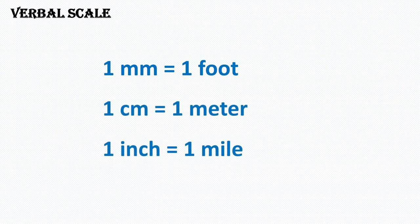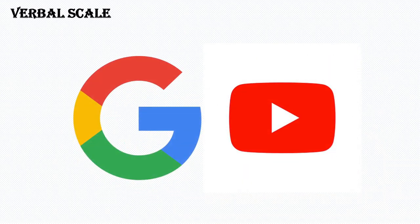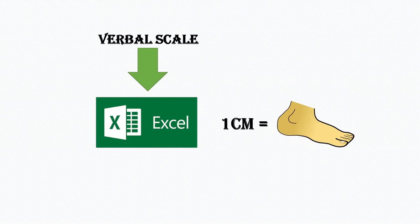Some examples of verbal scale: one millimeter equals one foot, one centimeter equals one meter, one inch equals one mile. This simply means you can use a measurement such as one centimeter to represent one meter of real-world size. We will be using the scale of one centimeter equals one foot, which means that one centimeter on this Excel sheet represents one foot of real-world measurement.